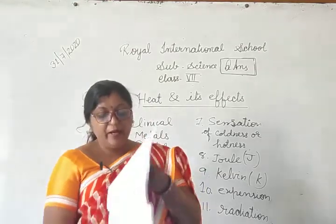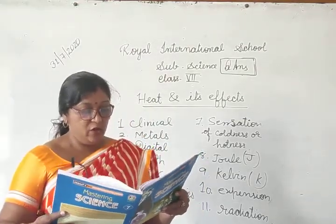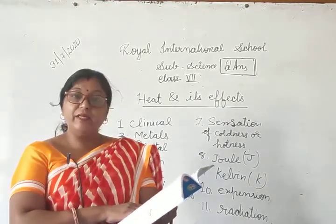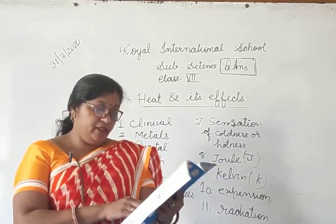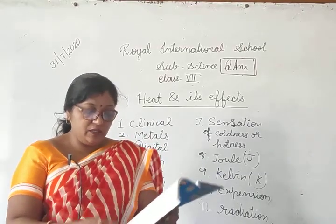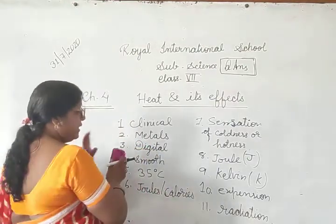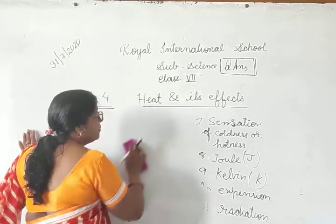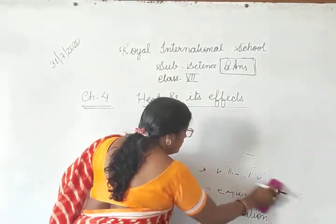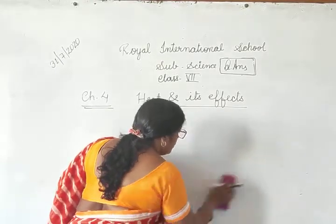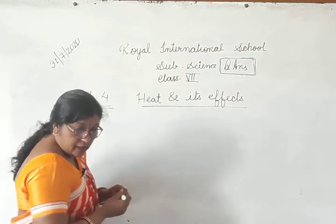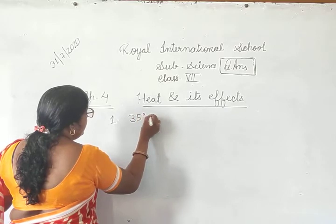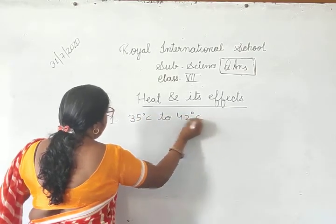Question C, first number: what is the usual temperature range of a laboratory thermometer? The usual temperature range of a laboratory thermometer is 35 degree Celsius to 42 degree Celsius.